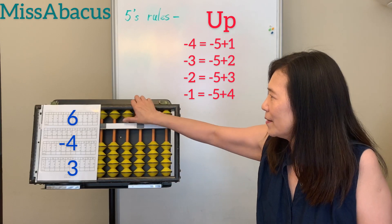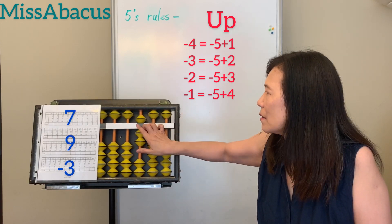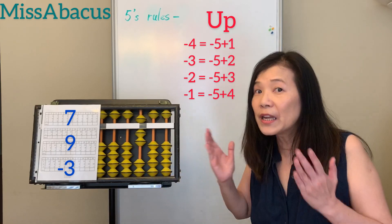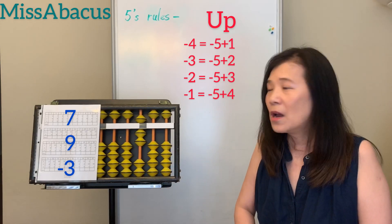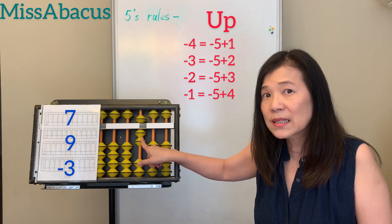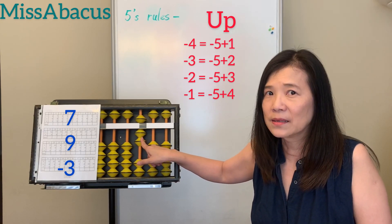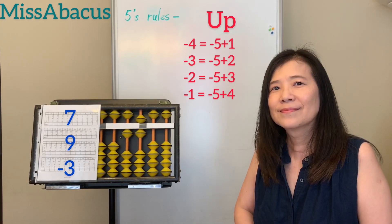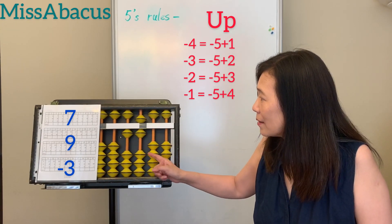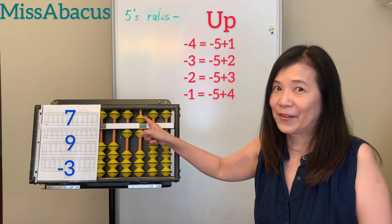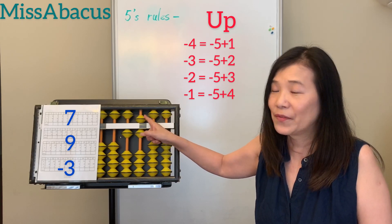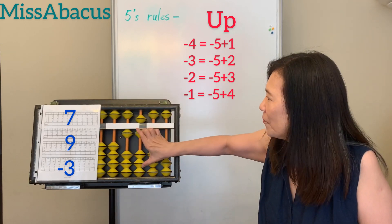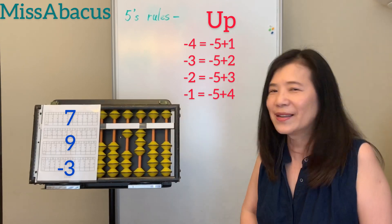Next problem: 7 plus 9. Not enough — if you don't have enough beads, of course apply the 10's rule. Always minus the complement, then plus 10. So for 9: minus 1, plus 10. Next number minus 3: you have 5, use the 5. For minus 3: up 5, up 2. Answer: 13.